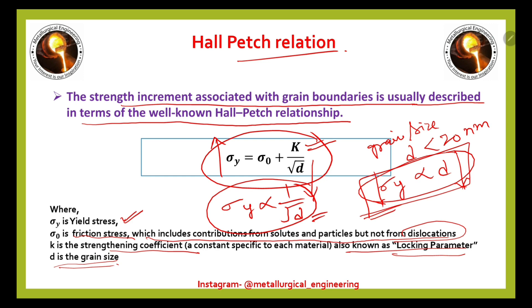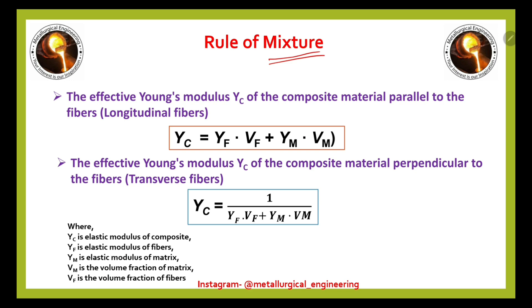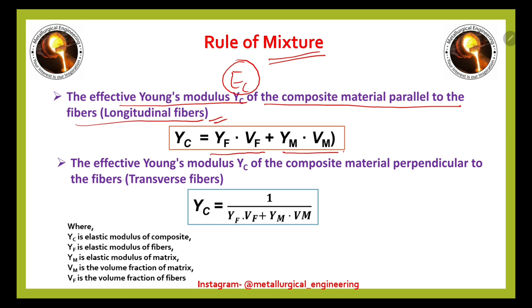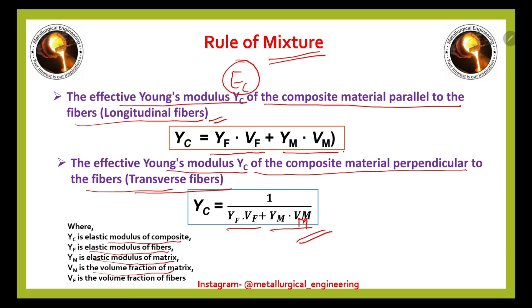Now we will see the rule of mixtures for calculating Young's modulus in composites. The effective Young's modulus EC of a composite material parallel to the fibers (longitudinal) is: EC equals EF·VF plus EM·Vm. For composite material perpendicular to the fibers (transverse), EC equals 1 divided by (EF·VF plus EM·Vm). Here EC is the elastic modulus of composite, EF is elastic modulus of fibers, EM is elastic modulus of matrix, Vm is volume fraction of matrix, and VF is volume fraction of fibers.